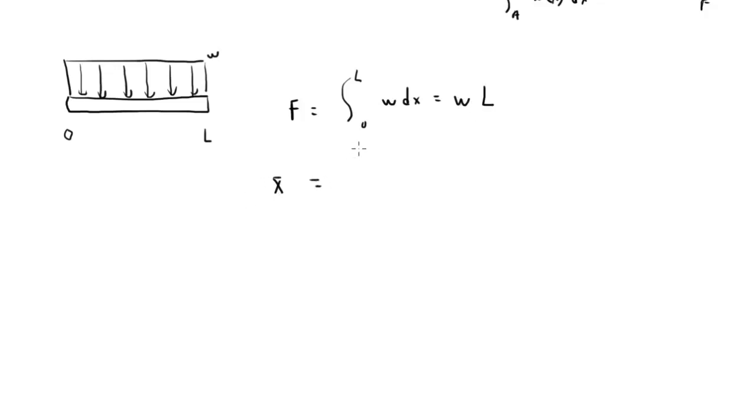x-bar: integral from zero to L of W times x dx divided by this integral which we've just calculated, so we'll just rewrite it, divided by WL. That's equal to W over 2 times L squared. If you're having trouble with calculus, if this is the step that's giving you fits, you need to review your calculus. Divided by WL. Well if you cancel all that stuff out, you'll get L over 2.